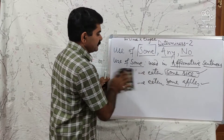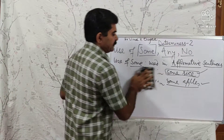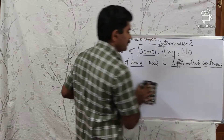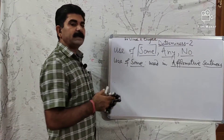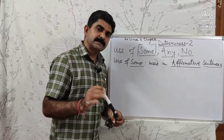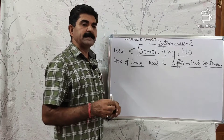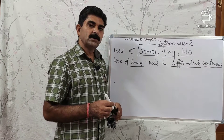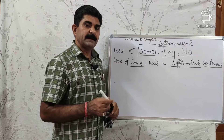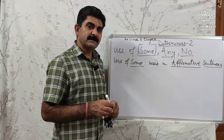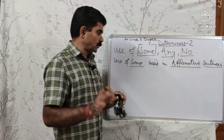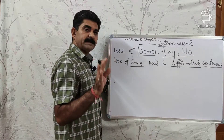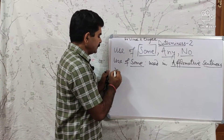Keep in mind that SOME is only used in affirmative sentences. You cannot say 'I have not eaten some rice' — that is wrong. You also cannot say 'Have I eaten some rice?' — that is also wrong. SOME is only with affirmative sentences.